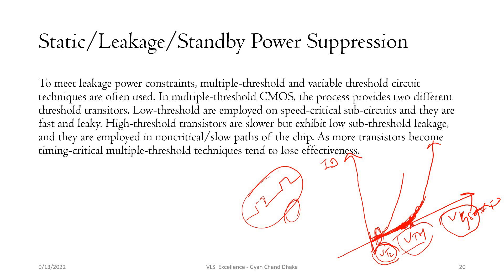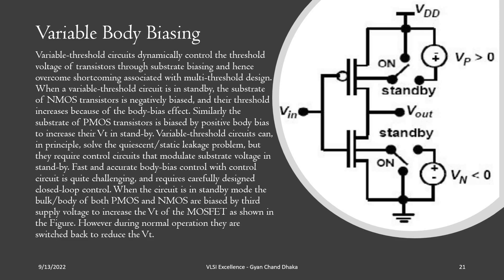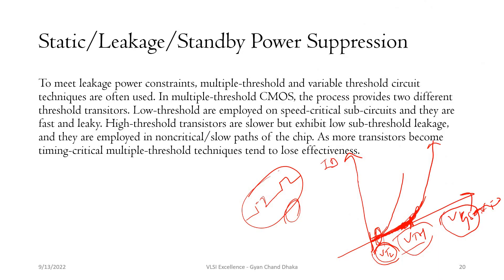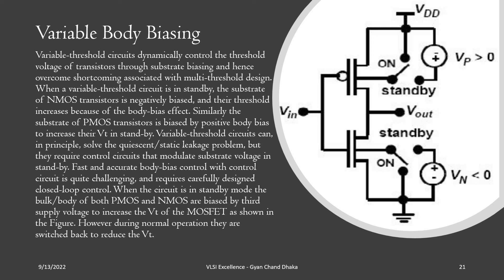Always remember: static power or leakage power can be minimized by using a higher VT transistor. We can increase the threshold voltage of a transistor by body biasing, which affects the threshold voltage. Without going into the full derivation, the threshold voltage can be increased by applying body biasing to the transistor. A higher threshold voltage transistor has lower leakage current — that is the reason we want to use a higher VT transistor.